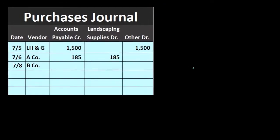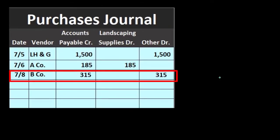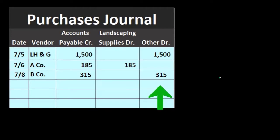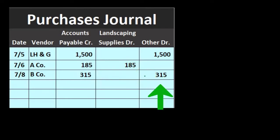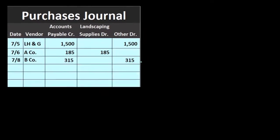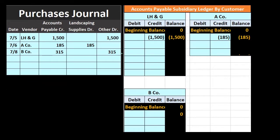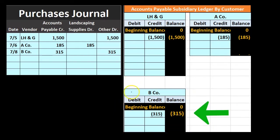On 7/8, B Company had a payable of $315. The other side goes to the 'other' column — we don't know the exact account, but it's not landscaping supplies, so it goes into the other category to be broken out at the end of the period. We record this to the subsidiary ledger with a credit to B Company, increasing their balance to $315.